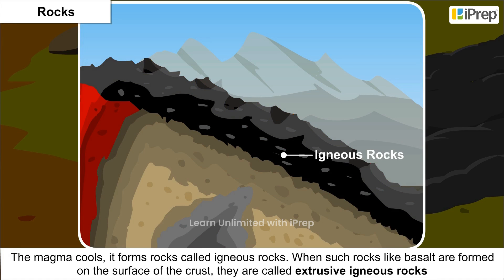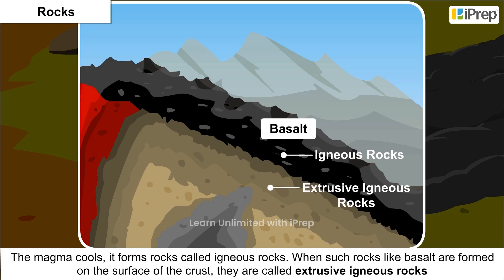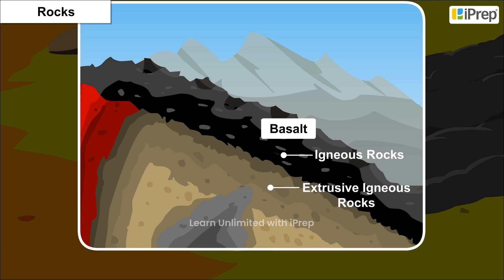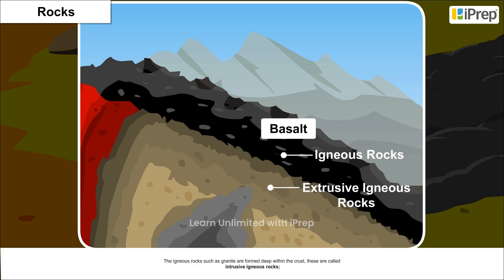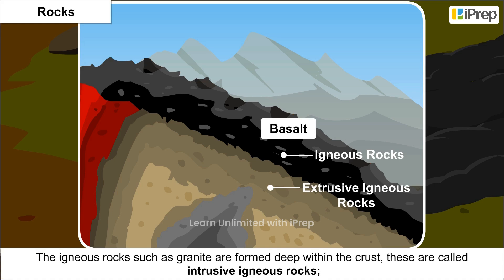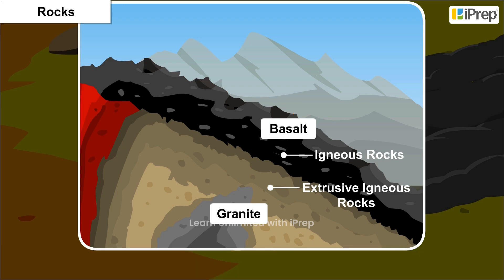When such rocks like basalt are formed on the surface of the crust, they are called extrusive igneous rocks. These are smooth in texture. When igneous rocks such as granite are formed deep within the crust, these are called intrusive igneous rocks. These are usually granular.